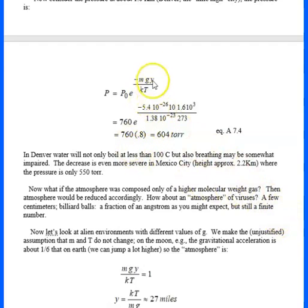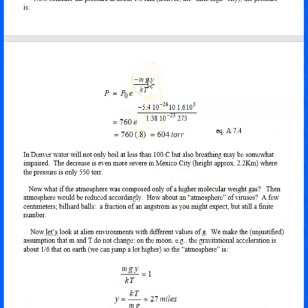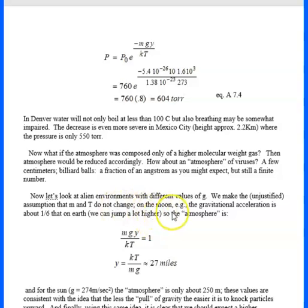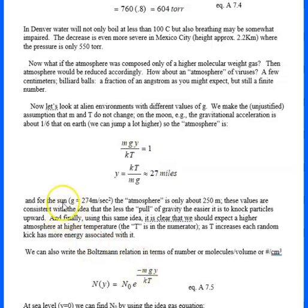Let's look at the value of g. Suppose we're on the moon, where the gravitational acceleration is about one-sixth of Earth's 10 meters per second squared — that's why you can jump much higher on the moon. If we were on the moon, the atmosphere would be less dense, but its height would increase: if g goes down, y goes up. Instead of 5 to 7 miles, it would be about 27 miles. On the sun — assuming room temperature, which is obviously not a brilliant assumption — the atmosphere would only be about 250 meters.